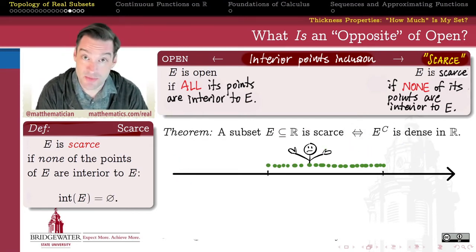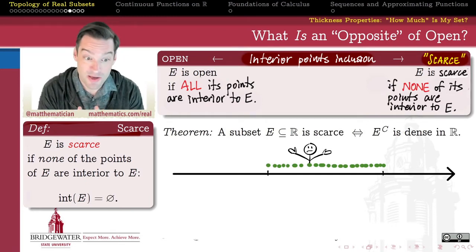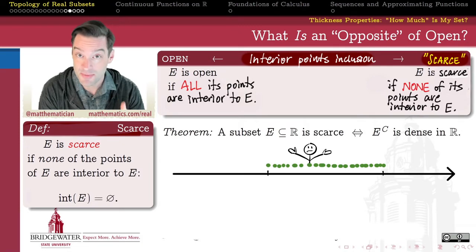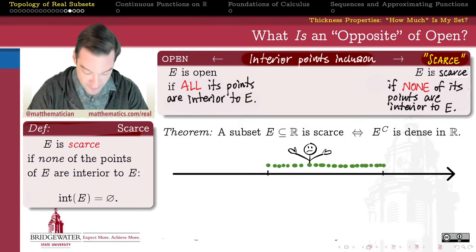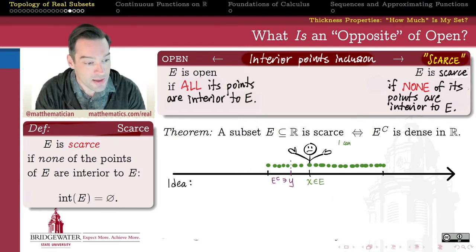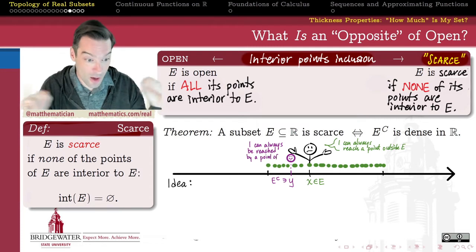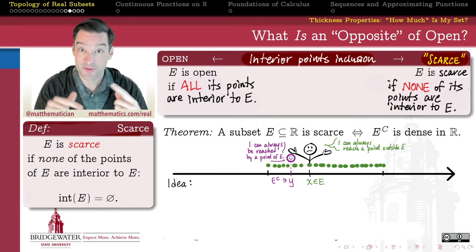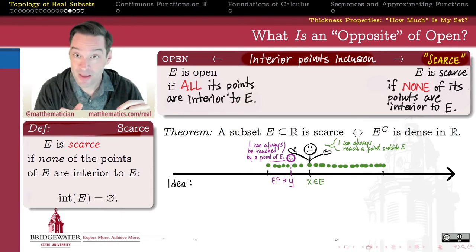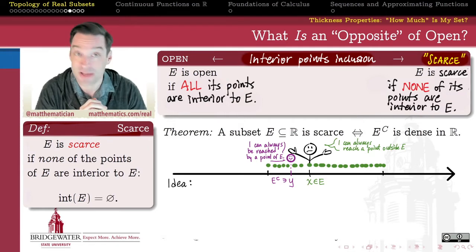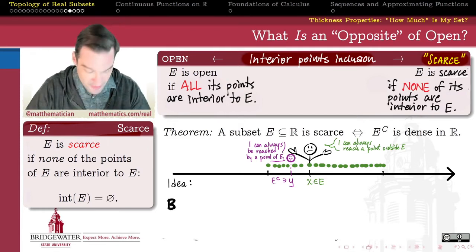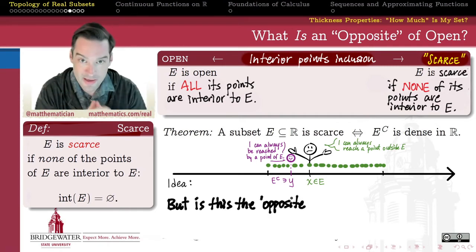As a subset of the real numbers, a subset E is scarce if and only if its complement is a dense subset of the reals. Being scarce in the real line means having a dense complement. If E is a scarce set, then epsilon arms from any point of E always reach a point outside of E, and so the primary example here is the relationship between the rational numbers and the irrational numbers as subsets of the real line.